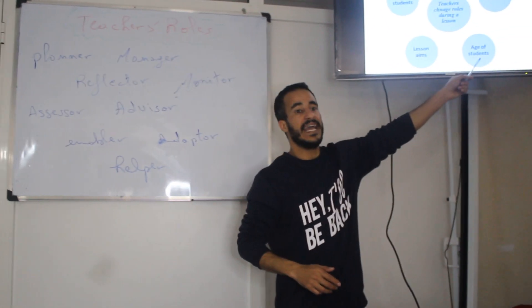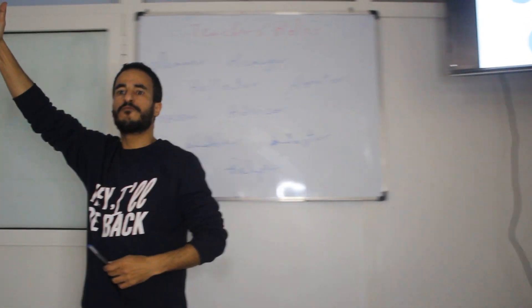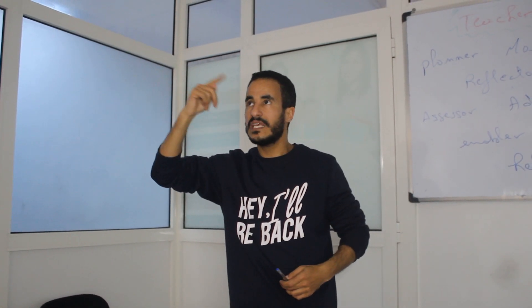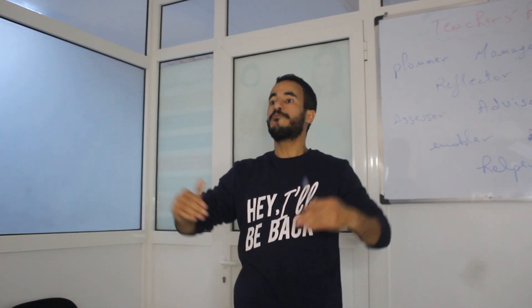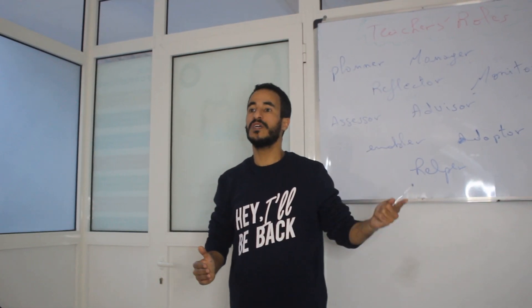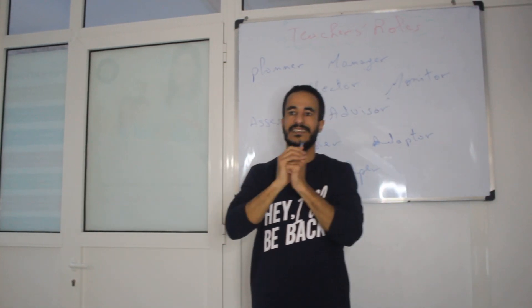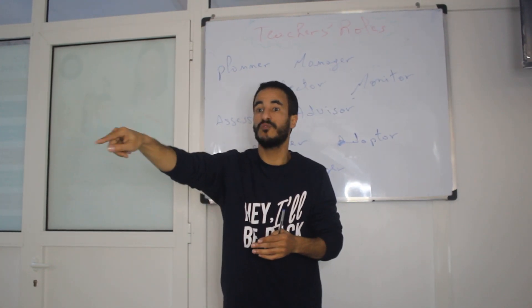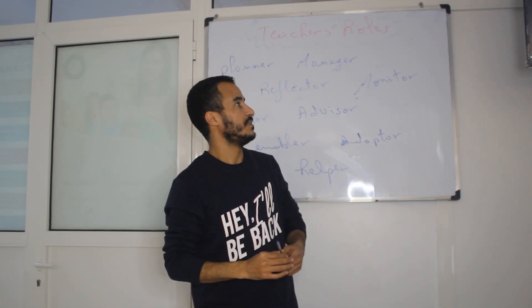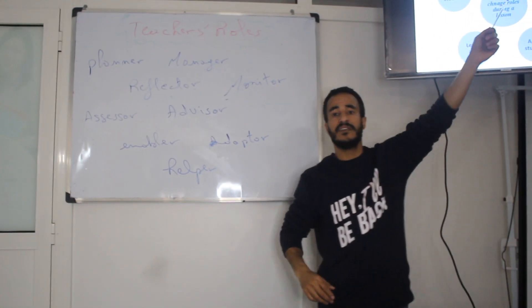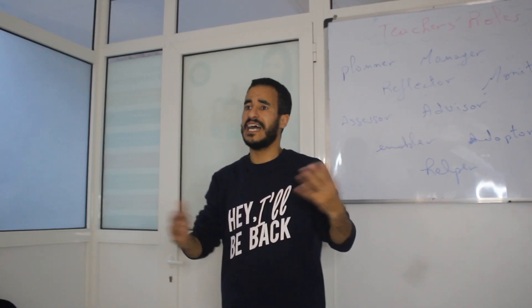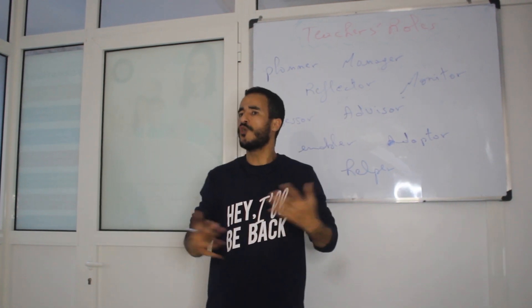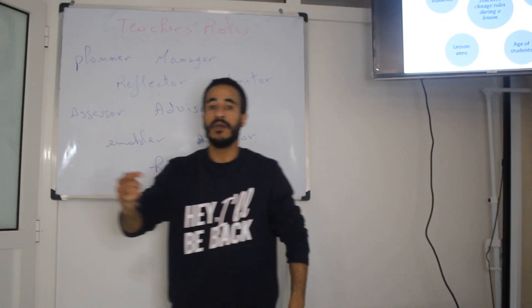You take the objectives of the lesson and the age of students into account. Activity one is presentation, activity two is practice, activity three is production. For each activity, think about which role to play. In presentation, you are the language resource — you give and present the information. In practice, you can be a helper or monitor. It depends on each activity, and also the lesson type: listening, reading, writing, grammar, vocabulary.